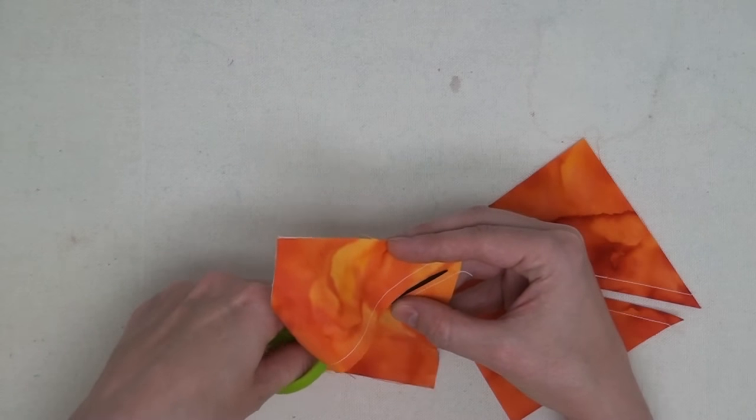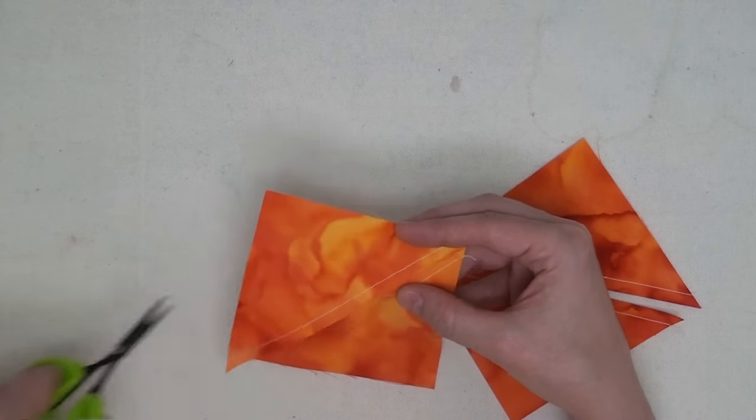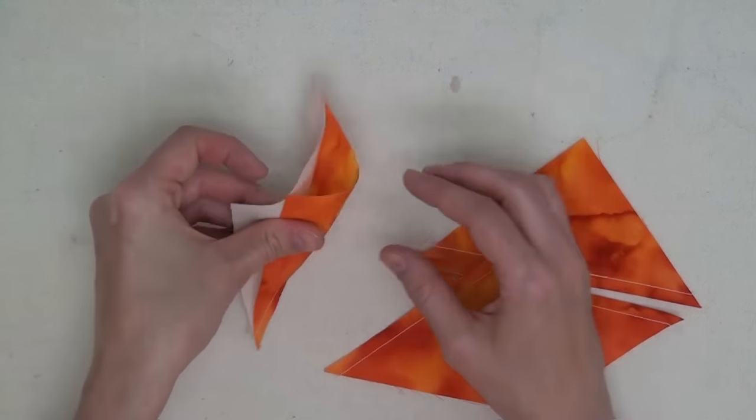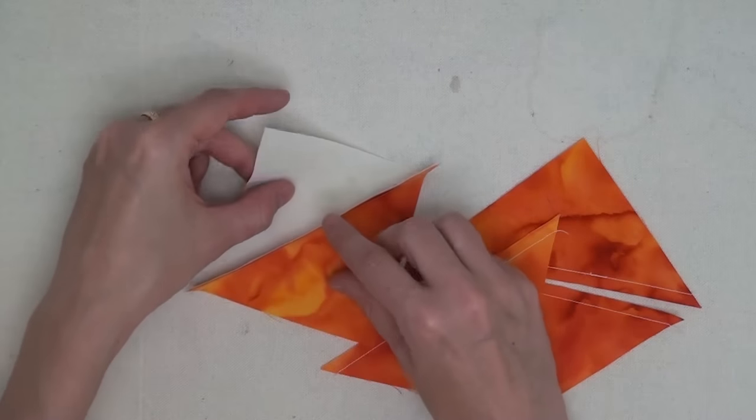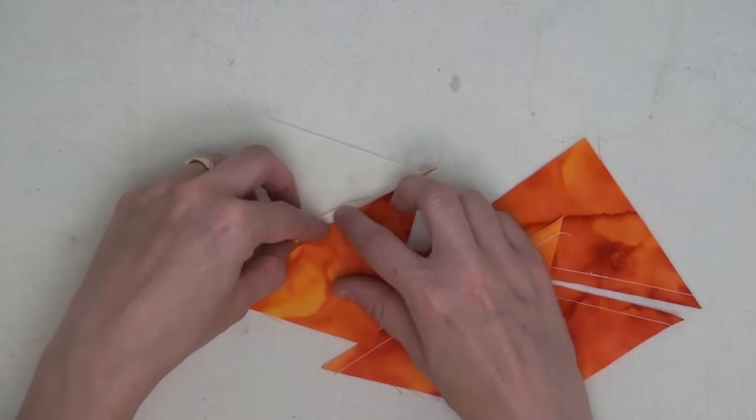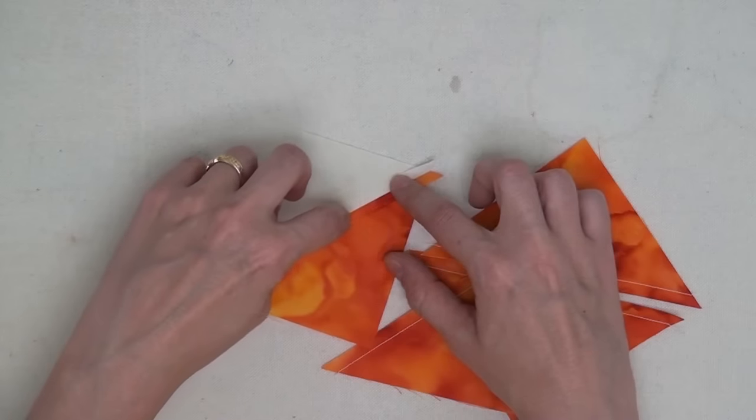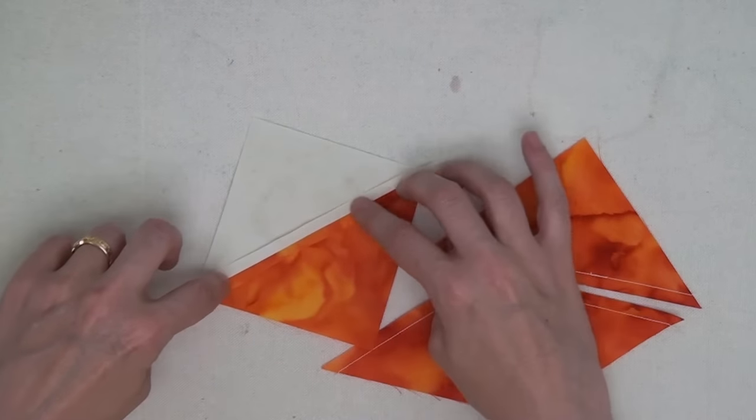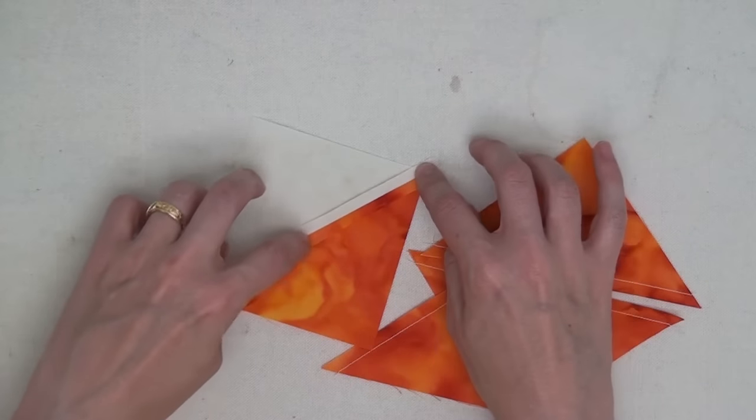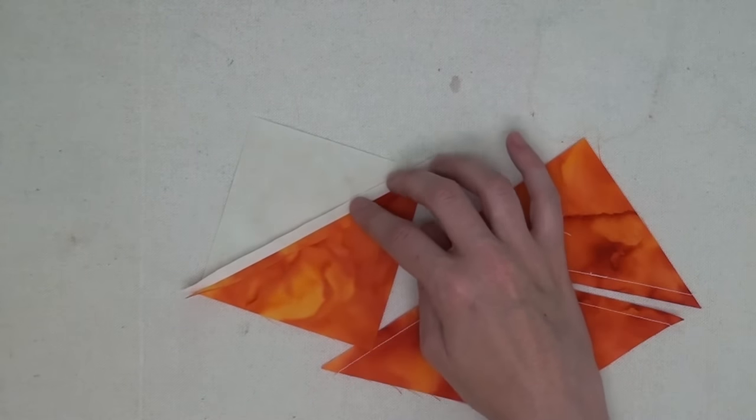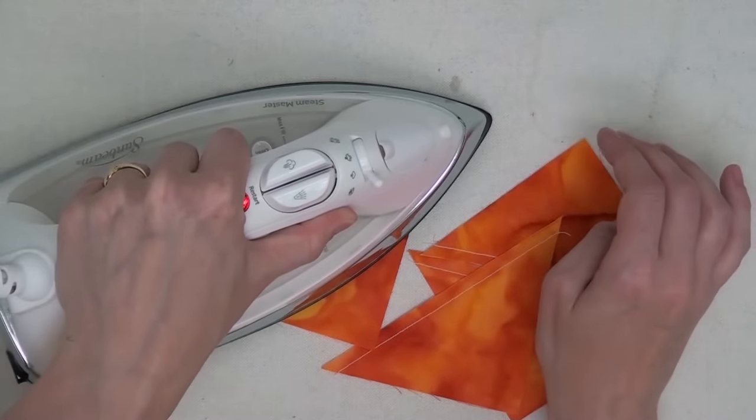So the next step to half square triangles is to trim them apart. You just cut right along that center marked line and then carefully open them up. Open up that seam allowance and finger press it open. Now this seam is on the bias so be really gentle as you finger press that open and then give it a good press with your iron.